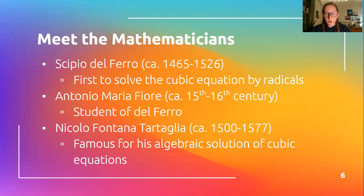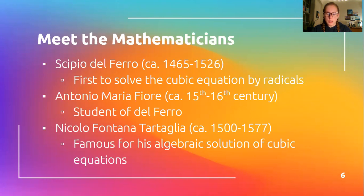Niccolò Fontana Tartaglia was born around 1500 and died around 1577. He was a self-taught mathematician, and due to his extraordinary talent, he was able to teach in Verona and Venice. He is famous for his algebraic solution to cubic equations, which was published in Cardano's book Ars Magna — Latin for 'great art.' Among his various other literary achievements, Tartaglia was the first Italian translator and publisher of Euclid's Elements in 1543.